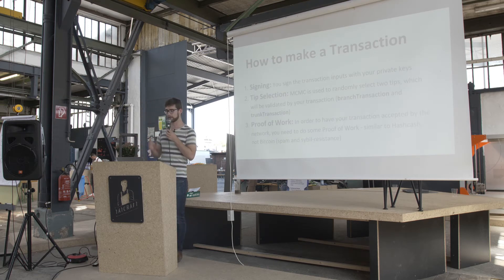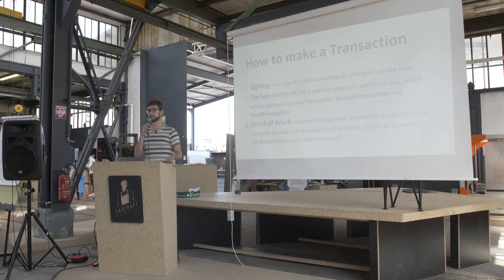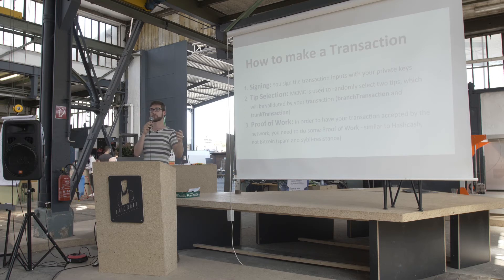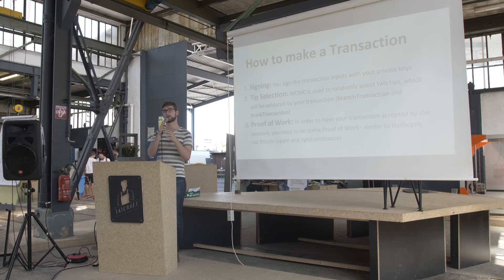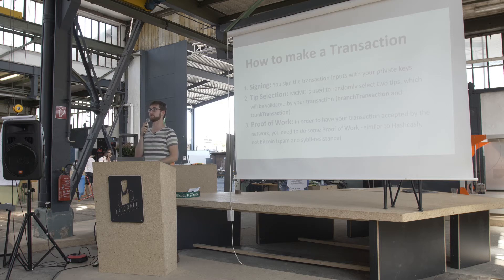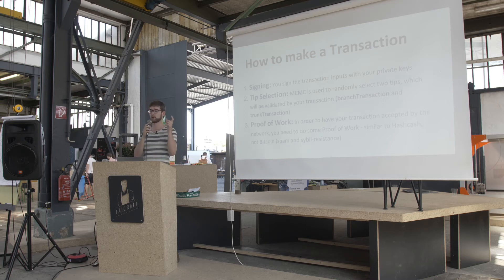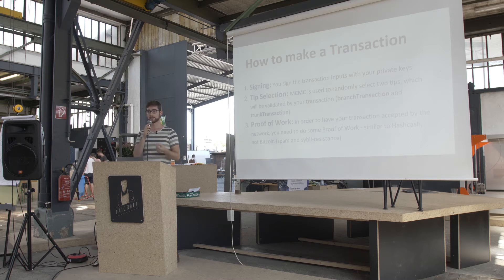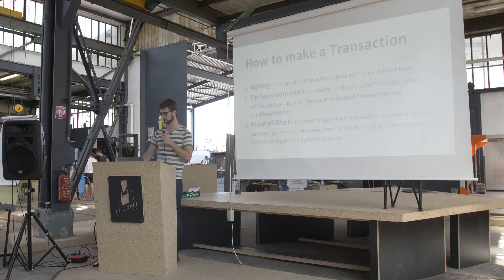With IOTA, how do you make a transaction? First, you have to sign the transaction inputs — you create a signature for a specific transaction. Then when you've created your bundle of transactions, you need to do proof-of-work on them. As opposed to Bitcoin where you've got miners, here each individual device that wants to publish a transaction does proof-of-work locally. The proof-of-work always references two previous transactions, thereby validating those, and once that's done it's published to the Tangle.